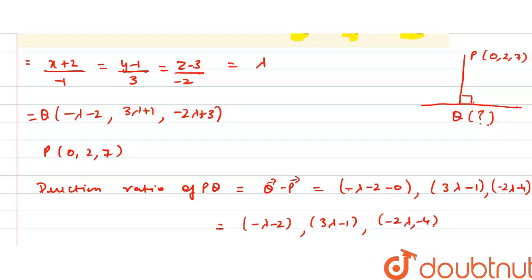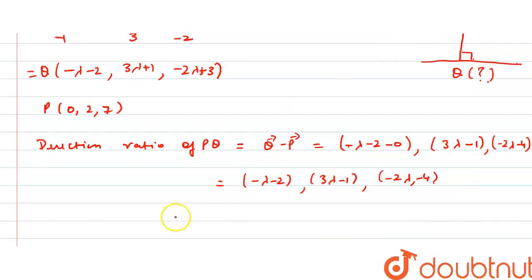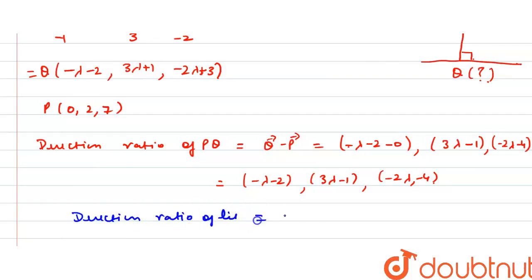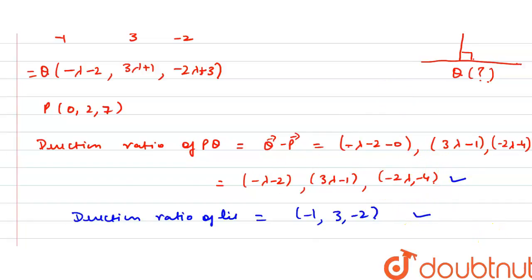The direction ratios of the given line are minus 1, 3, minus 2. The direction ratios of PQ are (minus lambda minus 2), (3 lambda minus 1), (minus 2 lambda minus 4). Since the line is perpendicular to PQ, their dot product must equal zero.